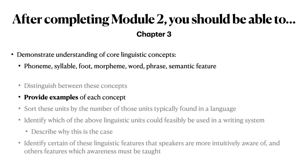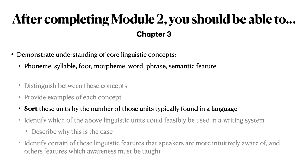Again, that list is: Phoneme, Syllable, Foot, Morpheme, Word, Phrase, and Semantic Feature. You should be able to sort these various linguistic units by the number of those units typically found in a language. For example, you should be able to explain whether there are more phonemes or words in a typical language.